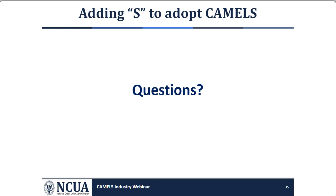What are the chances the FHLB will be considered a contingent borrowing capacity like the CLF and discount window? It will always be considered a contingent borrowing source, but it is not currently under consideration to be changed in the rule to be considered a federal source, because NCUA believes the Federal Home Loan Bank is still market driven. So right now, no change in the rule is anticipated.